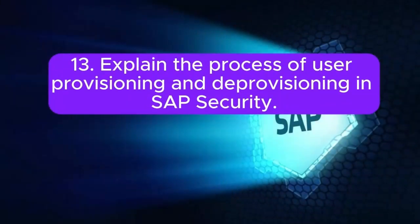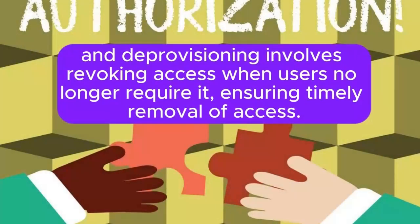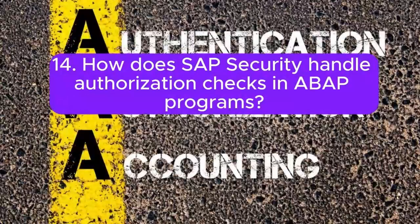Question 13: Explain the process of user provisioning and deprovisioning in SAP security. Answer: User provisioning involves granting necessary authorizations to users based on their roles. Deprovisioning involves revoking access when users no longer require it, ensuring timely removal of access.